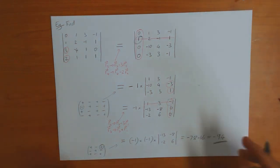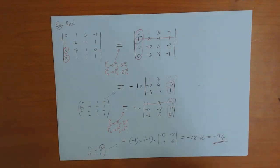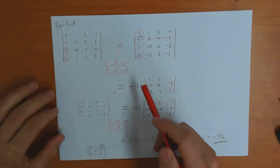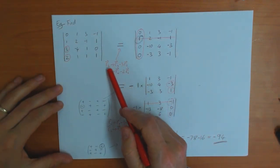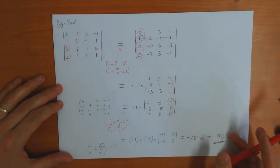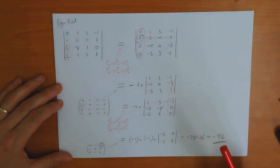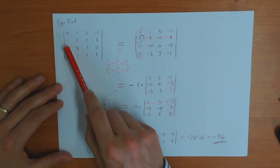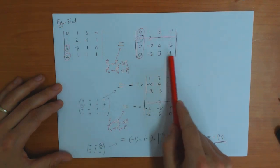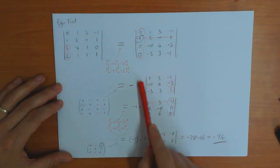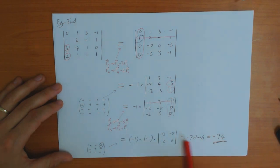So that's a bit of a long calculation because it's a 4 by 4 matrix. But using this theorem to make zeros makes the calculation much easier. If I'd done it without the theorem, I'd have to calculate the determinants of four 3 by 3 matrices, which is obviously much more work.